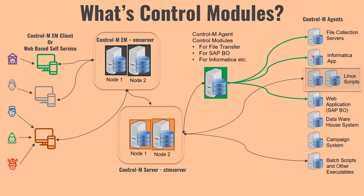For example, in SAP BO, if you want to schedule some reporting, you may also need to provide the root path of reports. So control modules are different for each third-party application. There are around 10–15 majorly used control modules, such as the control module for file transfer, SAP BO, Informatica, and recently the control module for Hadoop is also gaining popularity.